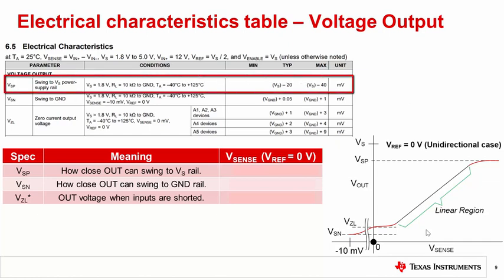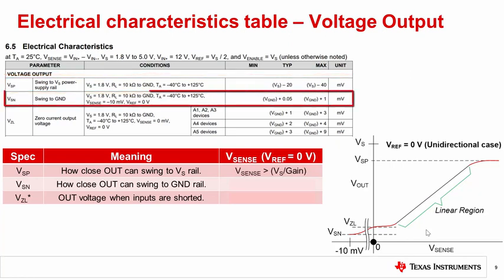Swing to power rail, or VSP, shows how close the output voltage can swing to the VS rail. This is accomplished by overdriving the input with a voltage beyond the full scale range of the device. The swing to ground, or VSN, conversely shows how out can swing to the ground rail by overdriving the input with a voltage below the full scale range. In this example, since the Vref equals zero for the testing condition, a VSN of negative 10 millivolts will slam the output to ground.